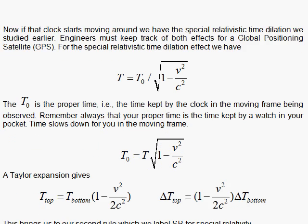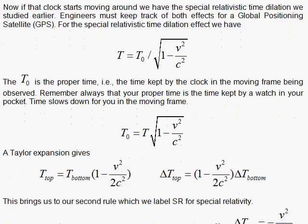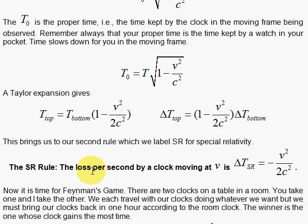So writing it that way, my zipping by T_0, that clock that's zipping by is the top clock, and the laboratory frame is the bottom clock. Doing that and playing the same game with the delta, the delta t on the bottom that was ticking away, say one second here, we have a loss. So we go to the special relativistic rule. Special relativity: the loss per second by a clock moving at speed v is given by minus v squared over 2c squared.